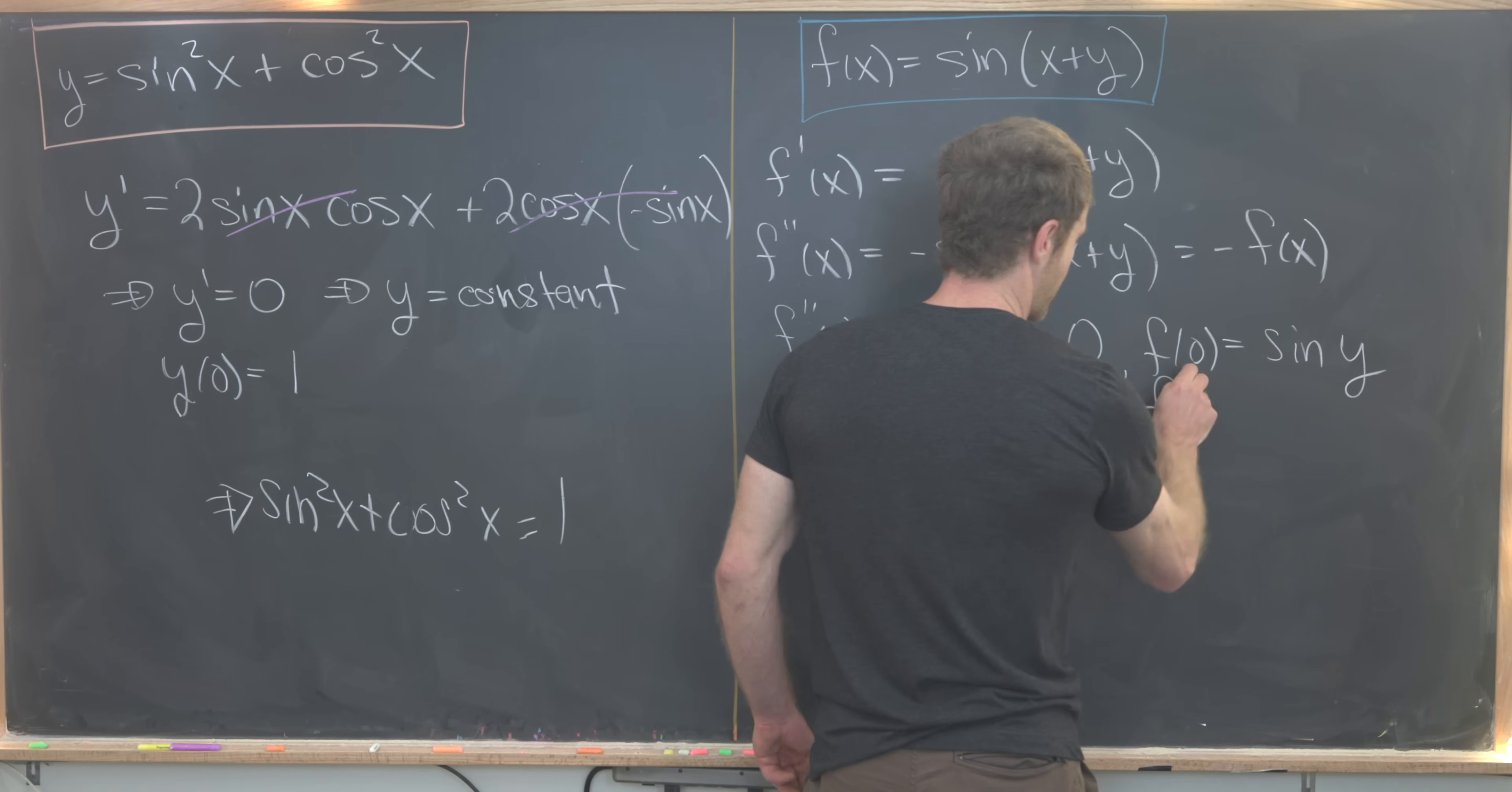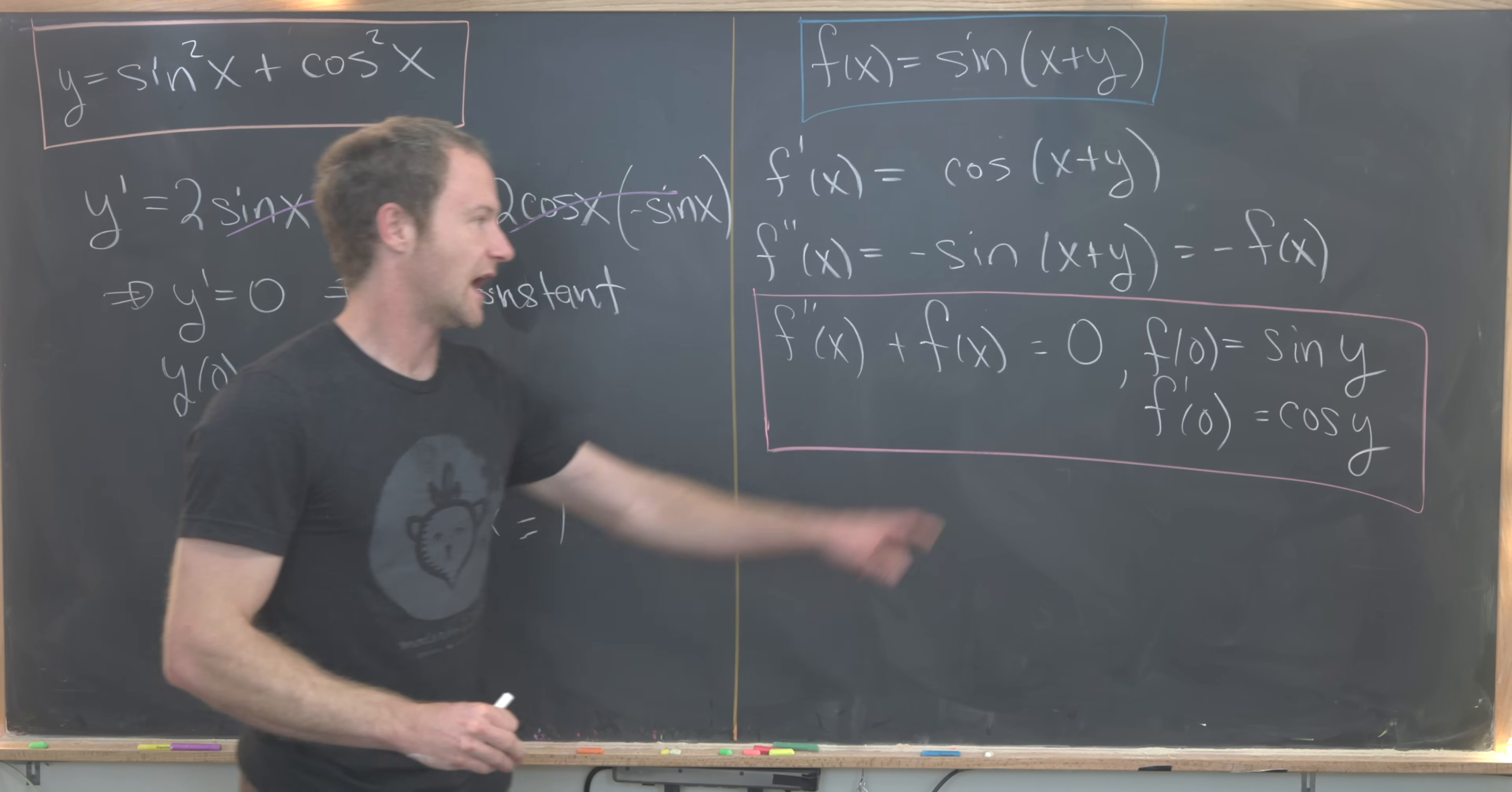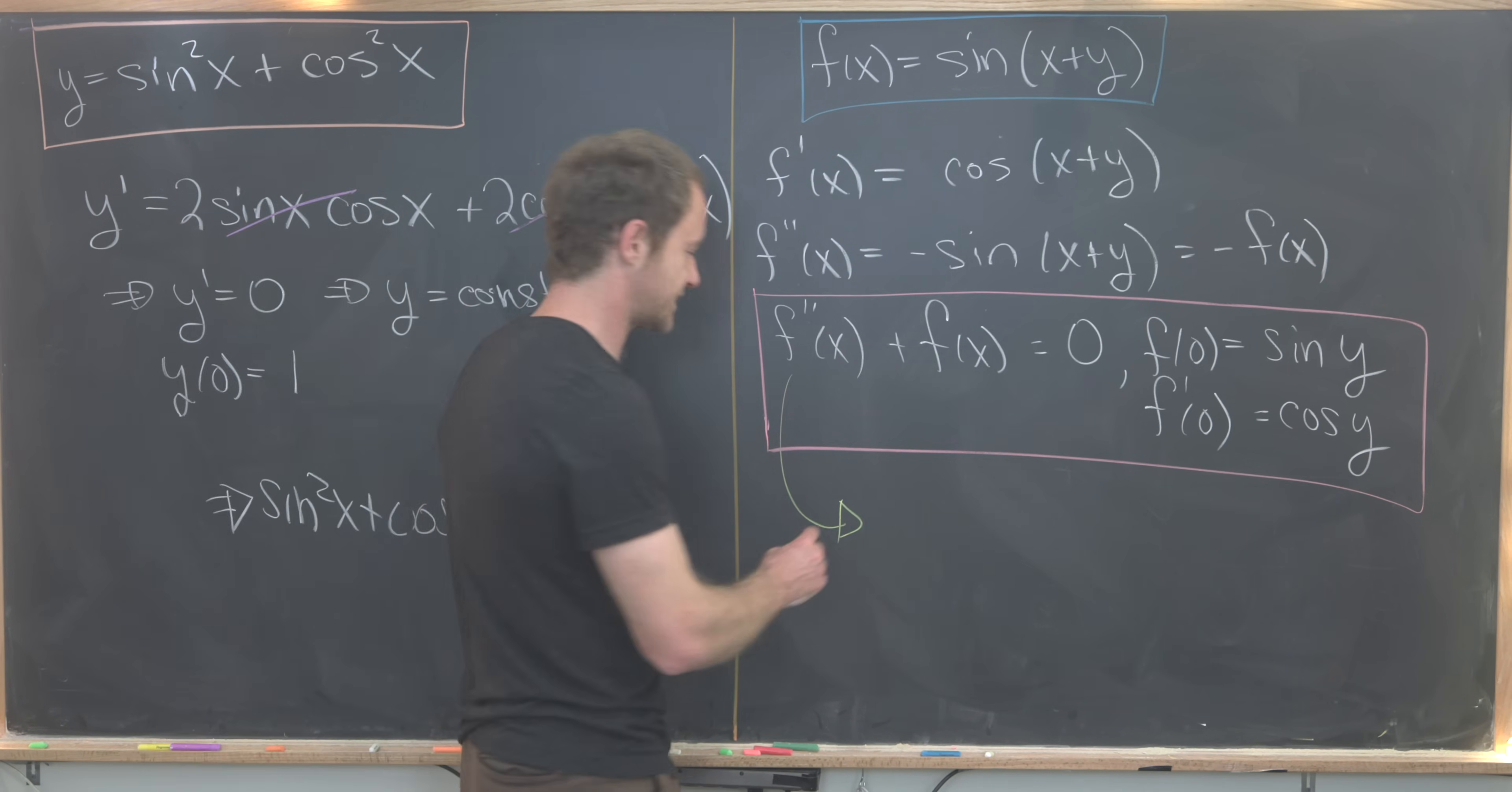We have a second-order homogeneous differential equation with constant coefficients and initial conditions. How would you solve this second-order differential equation? If you've taken a differential equations class, you may know or hopefully remember that the standard solution starts like this.